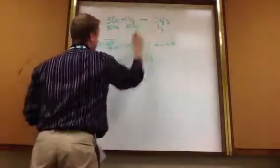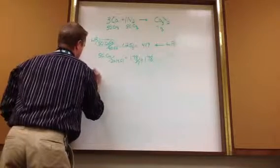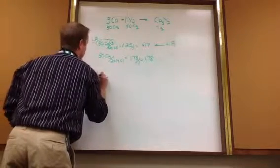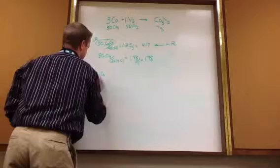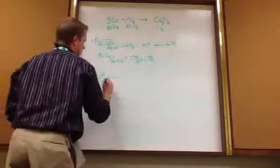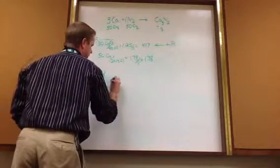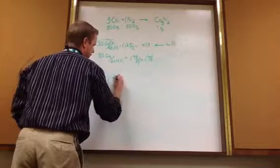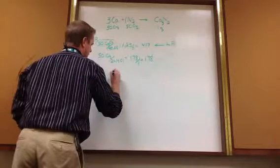So, here we go. We're going to calculate this. We start with 50.0 grams of calcium every single time. We turn that into moles. 40.08 grams of calcium and 1 mole of calcium.